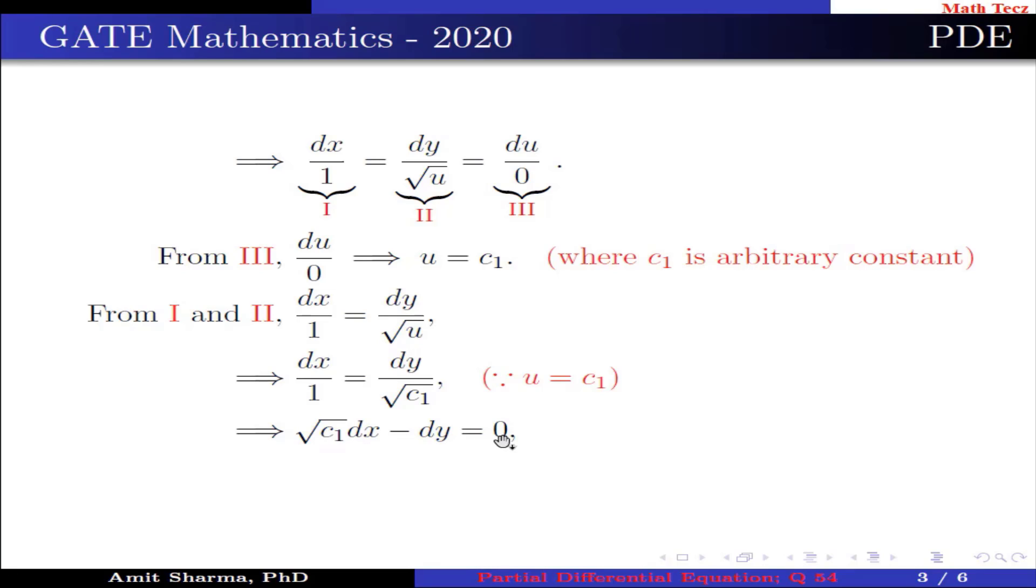Integrating both sides we get √c₁ x - y = c₂ where c₂ is arbitrary constant, which implies √u x - y = c₂.